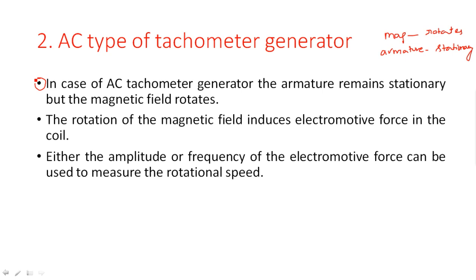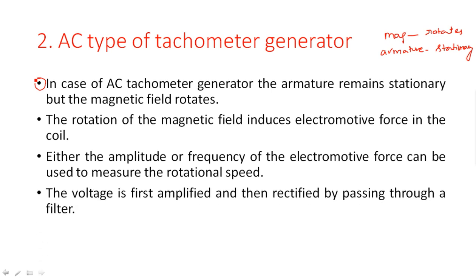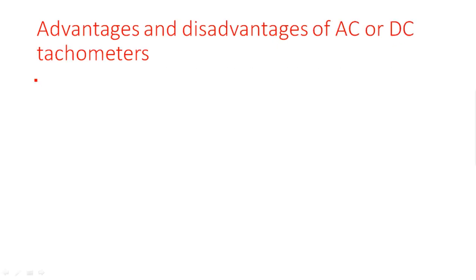Either the amplitude or frequency of the EMF can be used to measure the rotational speed. The voltage is first amplified and then rectified by passing through a filter. These are the working principles of AC and DC electrical tachometers.